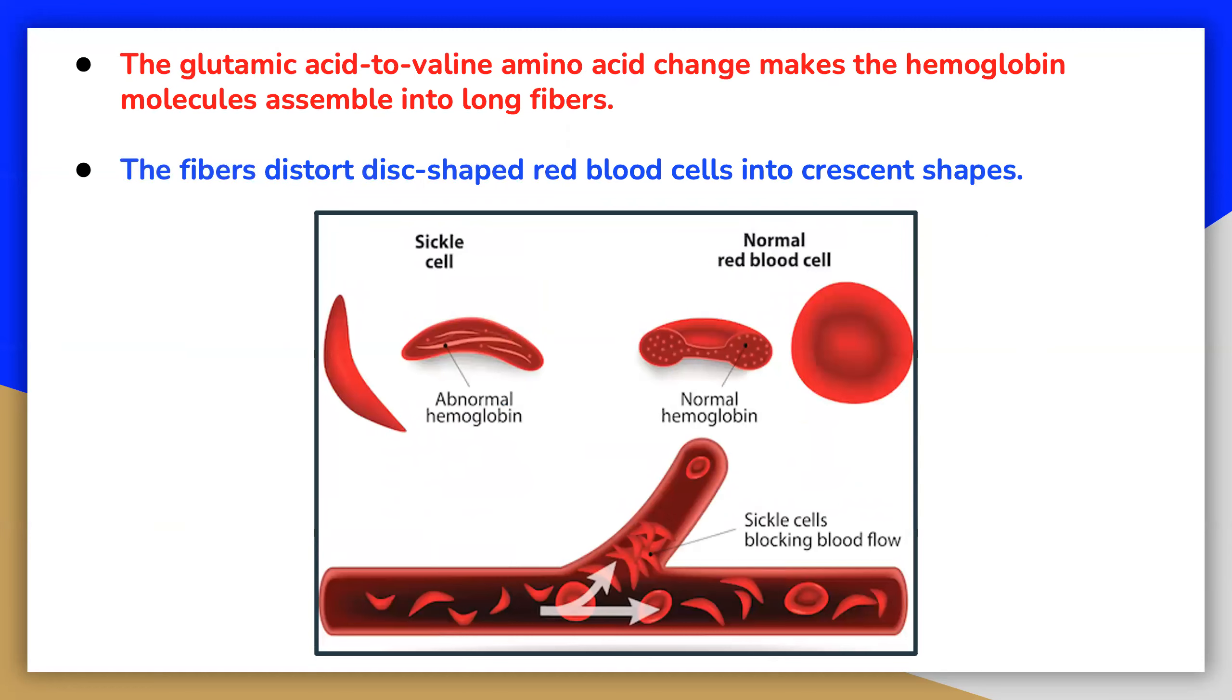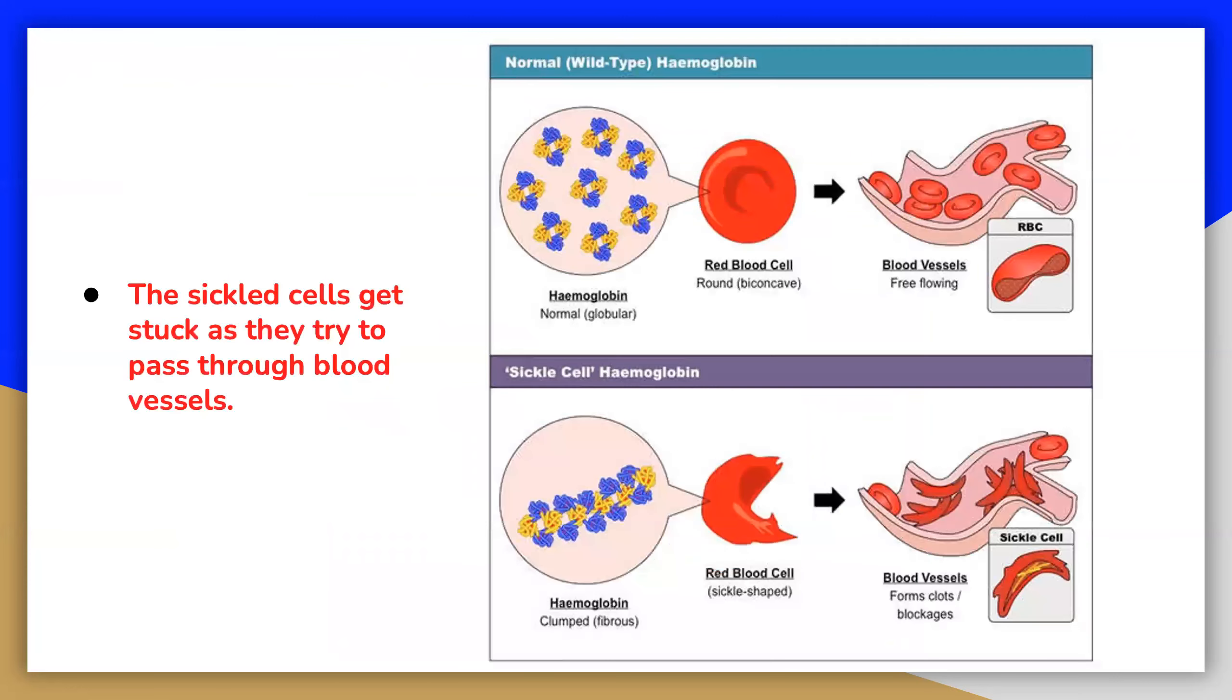A person whose body makes only sickle cell hemoglobin will suffer symptoms of sickle cell anemia. These occur because the glutamic acid to valine amino acid change makes the hemoglobin molecules assemble into long fibers. The fibers distort disc-shaped red blood cells into crescent shapes. The sickle cells get stuck as they try to pass through blood vessels.